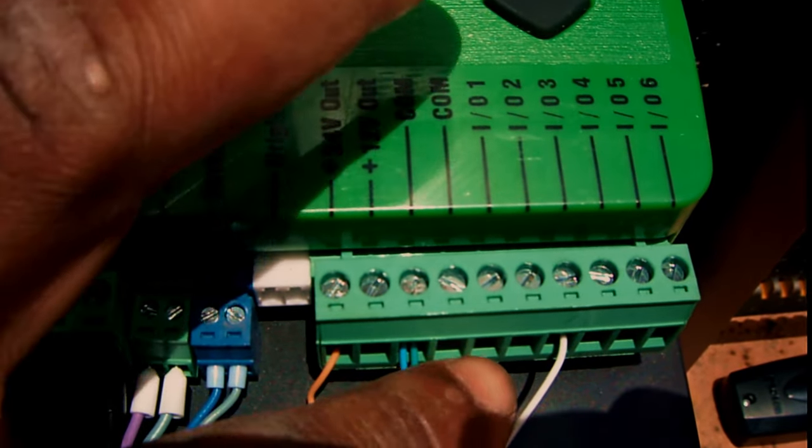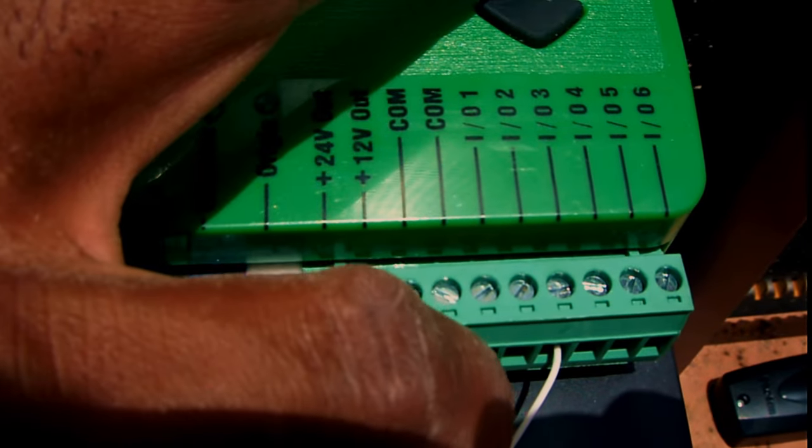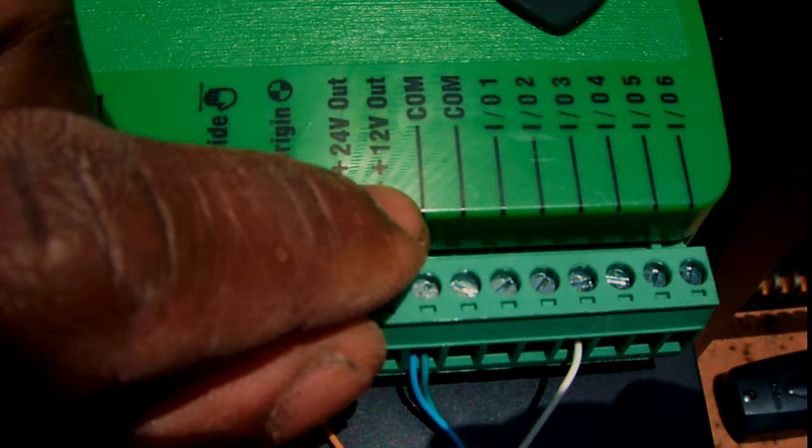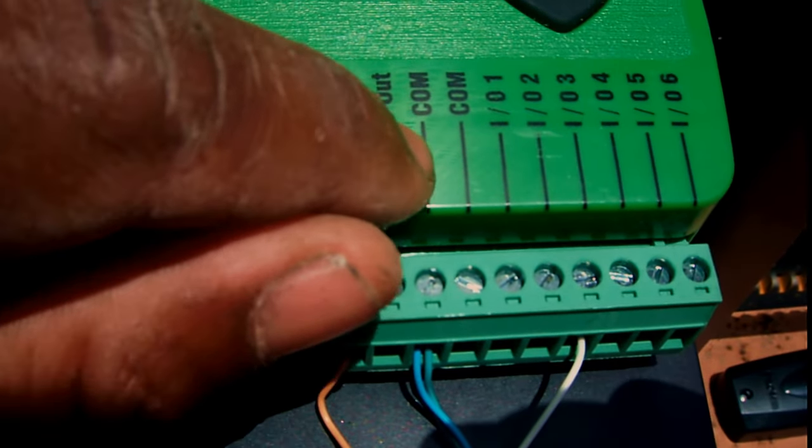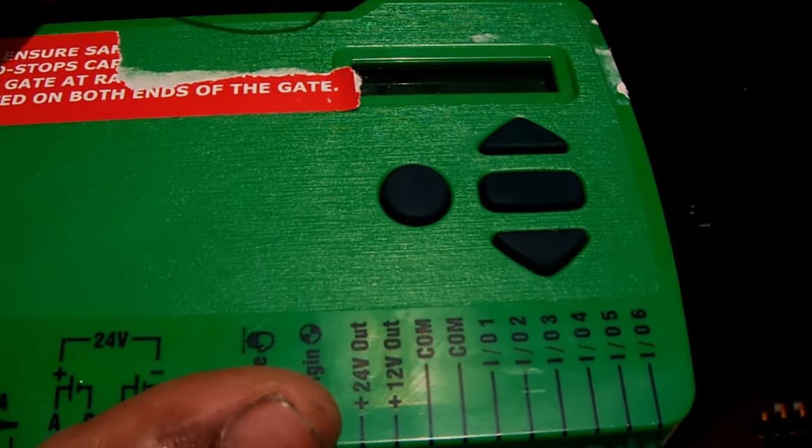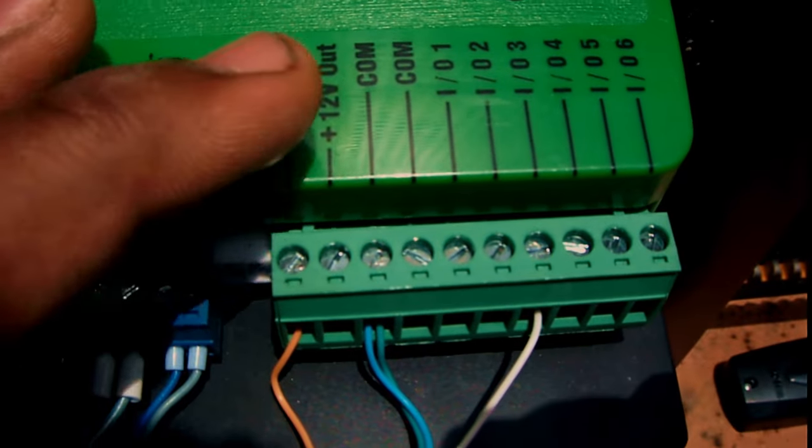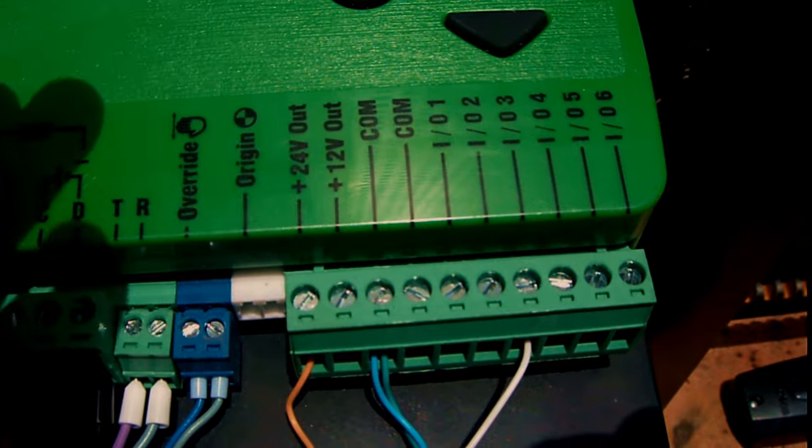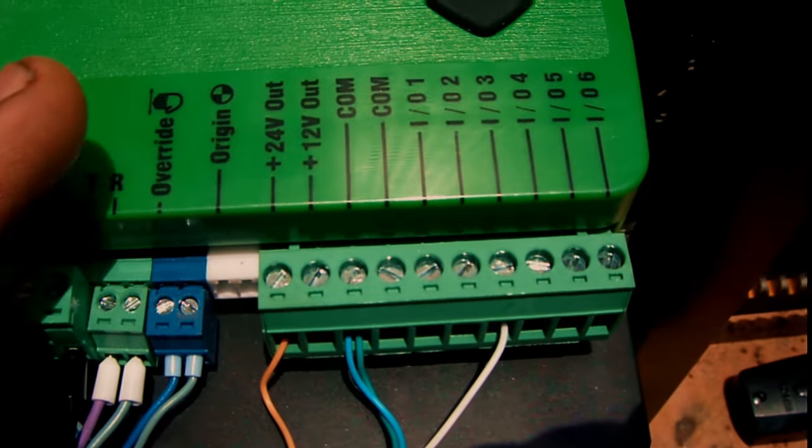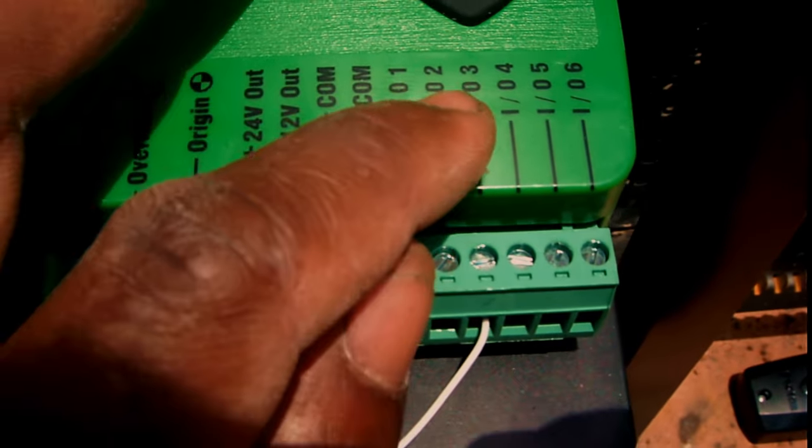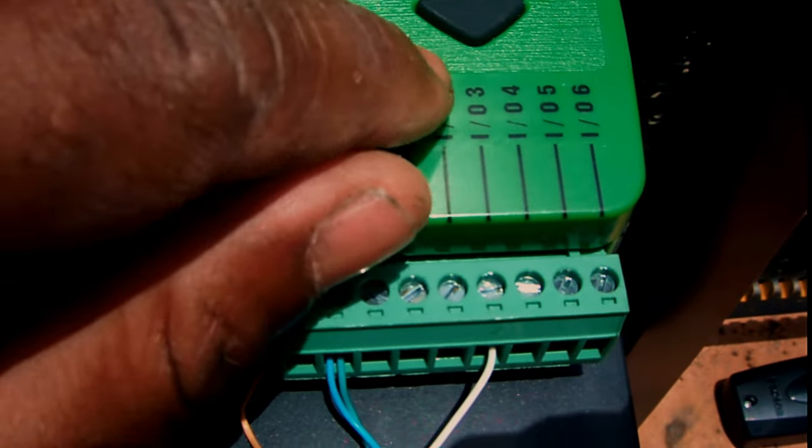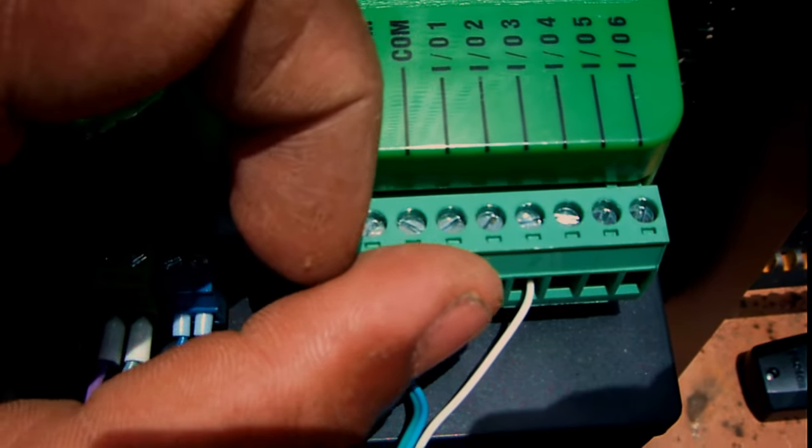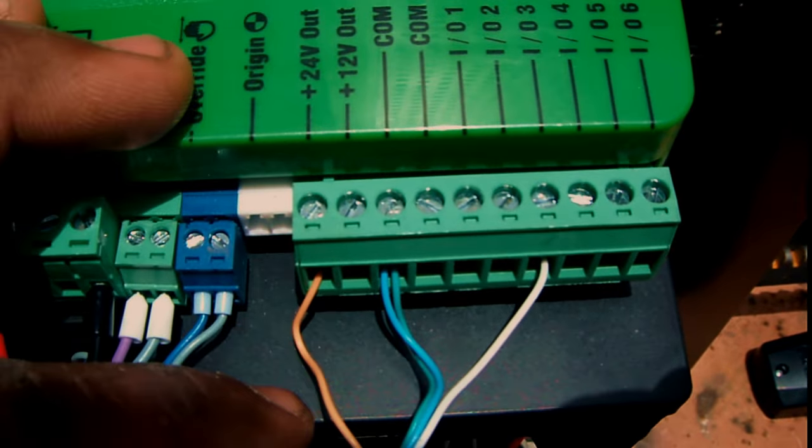The negative and the common of the photocell have to go to one common port on the board of the D5 Smart. Then your normally closed, if it's closing safety, has to go to the IO3 port. The IO3 port is dedicated for the photocell connections. That's the basic wiring for the photocell.